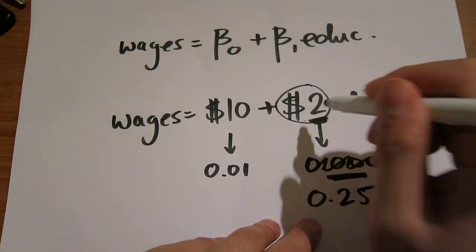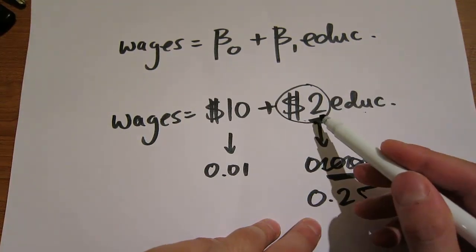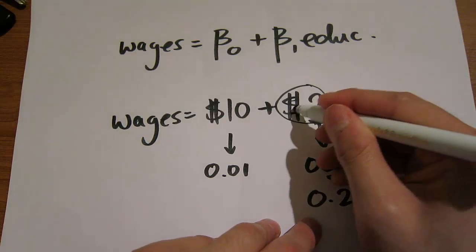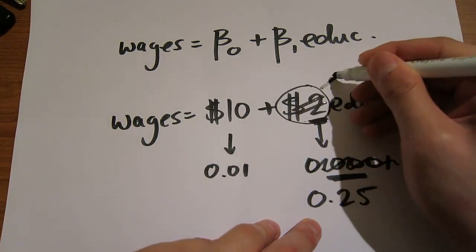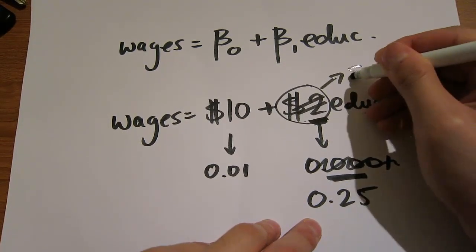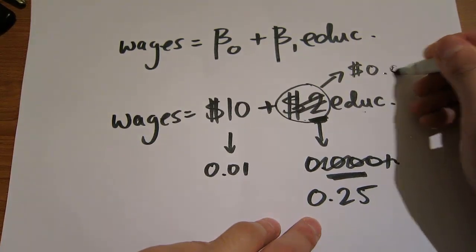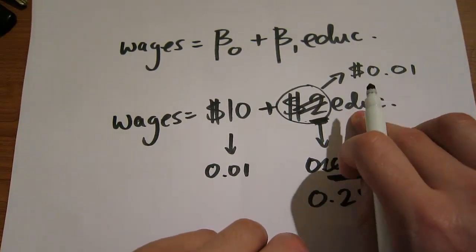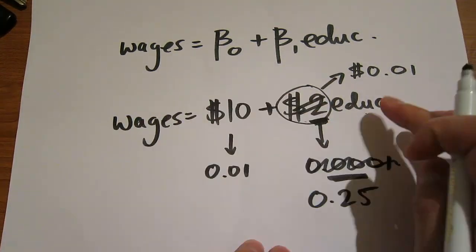Now, how could this be economically insignificant? Suppose we estimated it to be $0.01. For every year of education, your wage goes up by only $0.01.